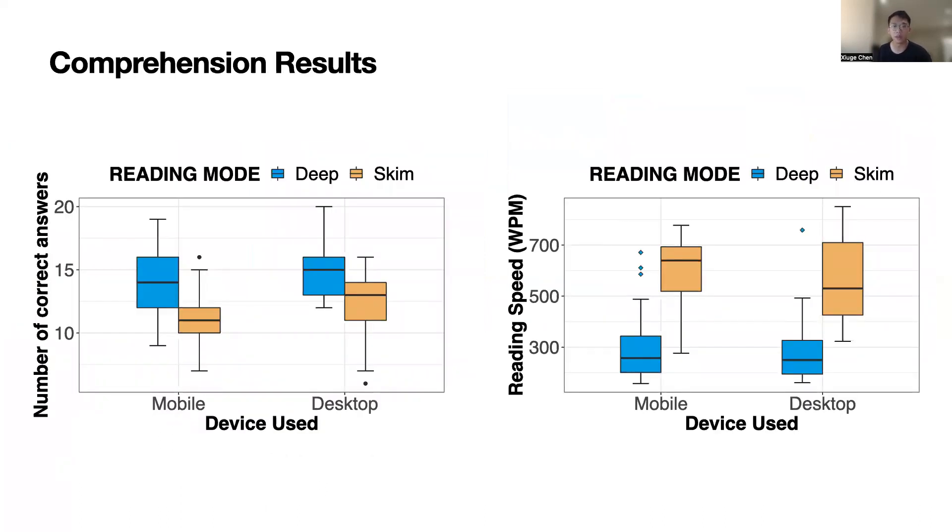Looking at the comprehension results and reading speed, we can show that we have successfully induced skim versus deep reading, as participants generally have better comprehension results and read much slower in deep reading. There's no significant difference between desktop and mobile.